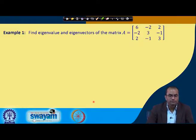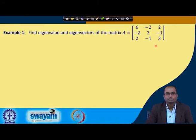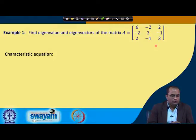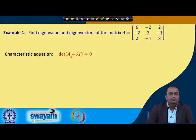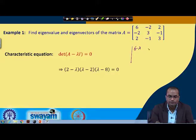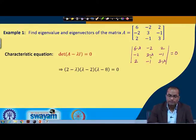We will see this with the help of examples. In this case we find the eigenvalues and eigenvectors of the matrix given as [6, -2, 2; -2, 3, 1; 2, -1, 3]. For this matrix we will compute the eigenvalues and eigenvectors. We need to write down the characteristic equation, which is the determinant of A minus lambda·I equal to zero. The determinant gives us a 3×3 matrix with lambda subtracted from the diagonal entries.